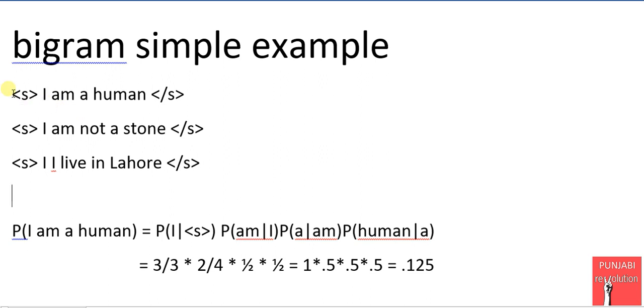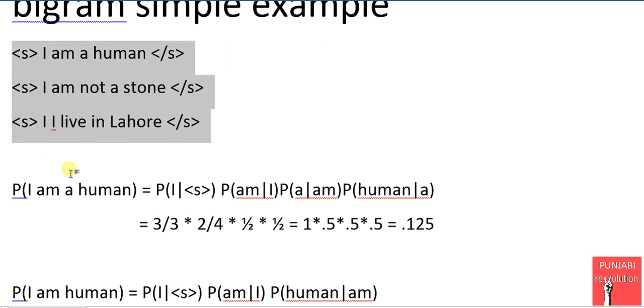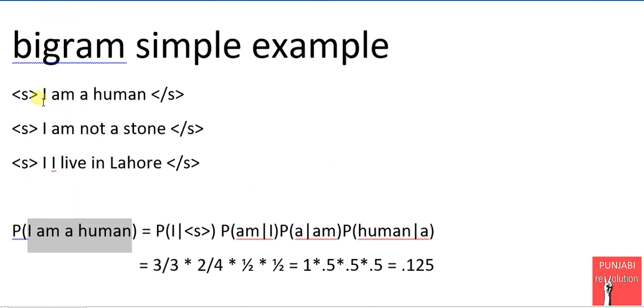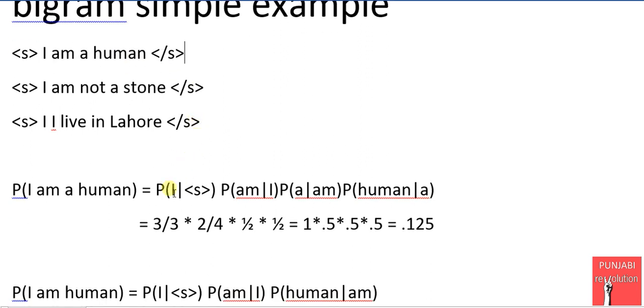Suppose it is a very simple example. We have a corpus training data and by using this training data we want to find the probability of a sentence 'I am a human.' This sentence is also available in this training data so its probability will be definitely high. By using the bigram model that we discussed in earlier lectures, we computed its probability and that is 0.125.